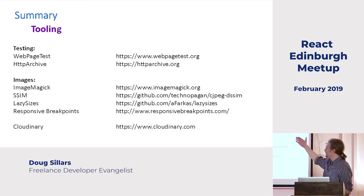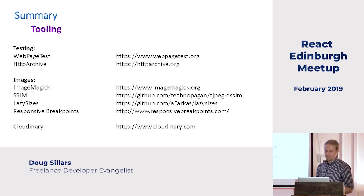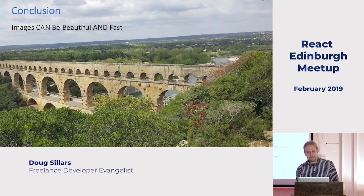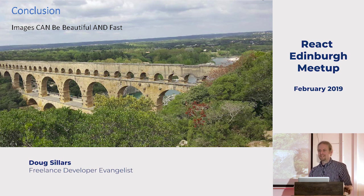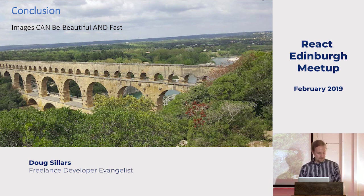I used a lot of tools here — WebPageTest and HTTP Archive — those are the things I used to optimize the images for the examples. I'll put the slides up on the meetup page so feel free to take a picture, but I'll put them up too so you can get them later. In conclusion, you can deliver fast images that look great that your customers don't know anything about. Thanks for listening, I appreciate it.